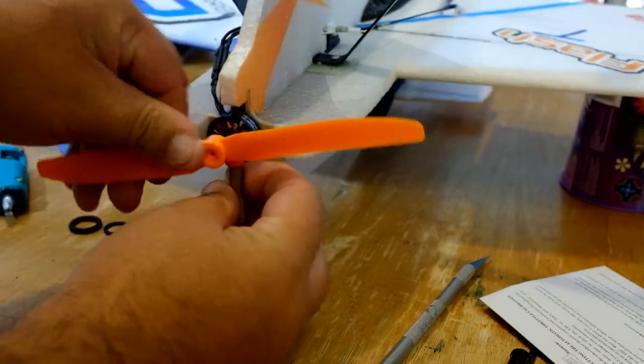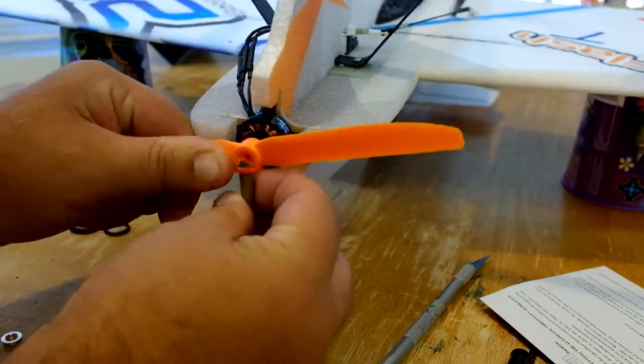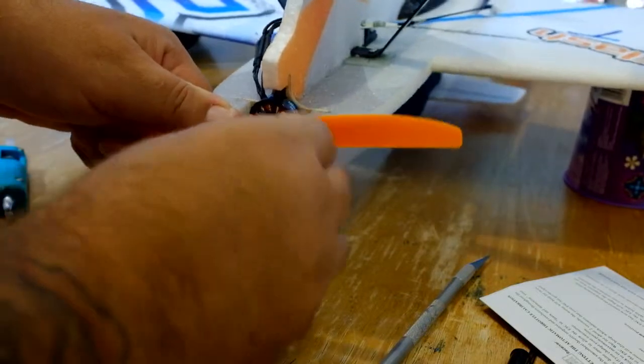Take your prop, set it up on top like this, and lock it into place. Pull your band around and slip your tubing.